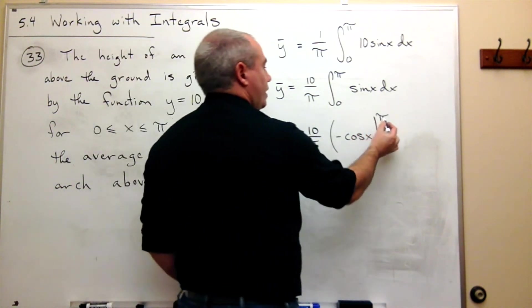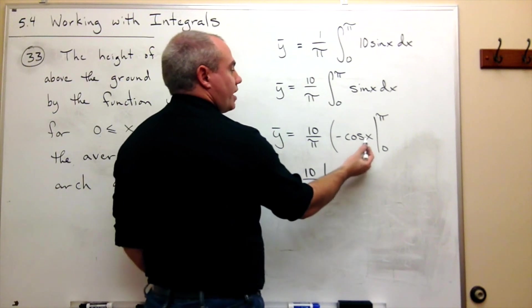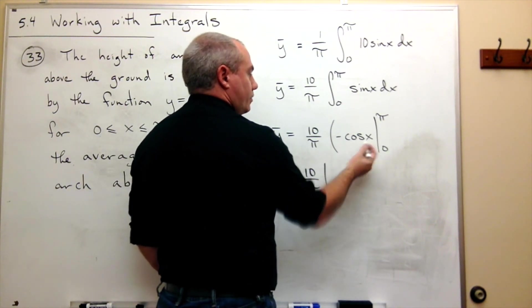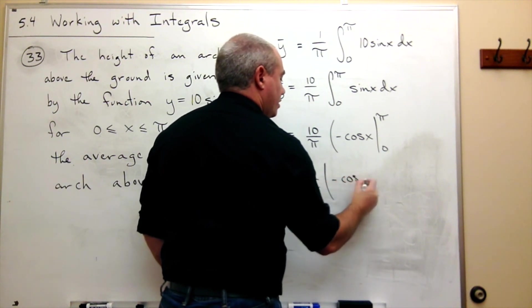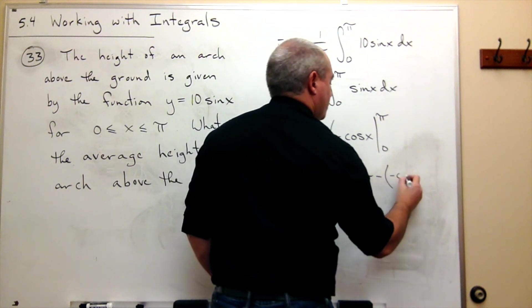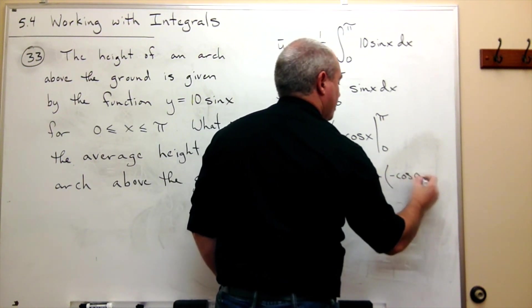cosine of pi is negative 1. So I'm plugging in pi, I get negative cosine of pi minus negative cosine of 0.